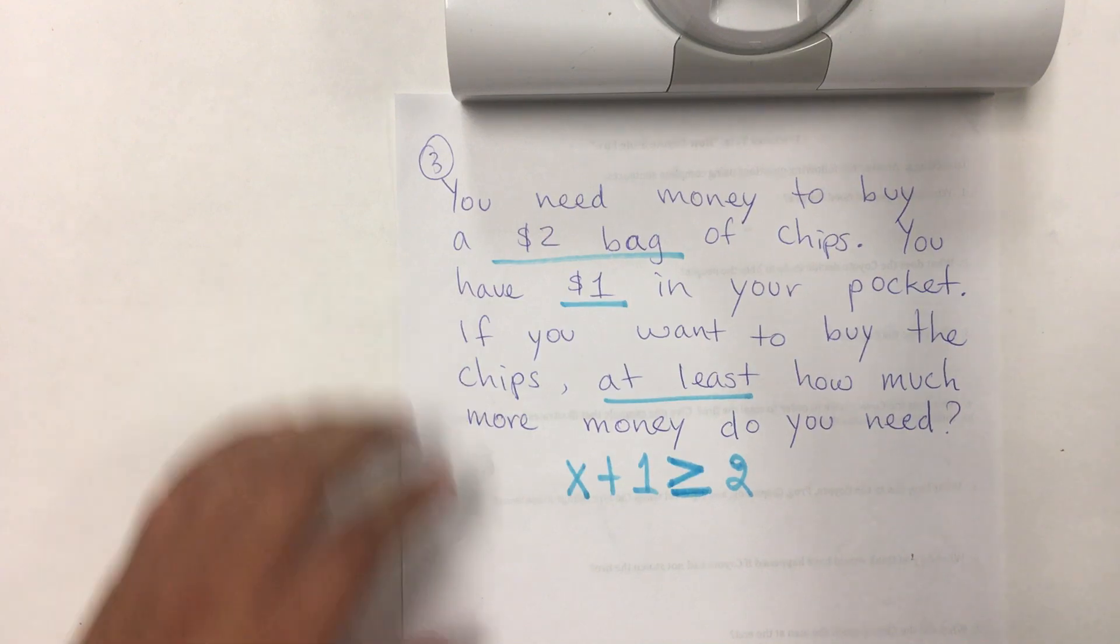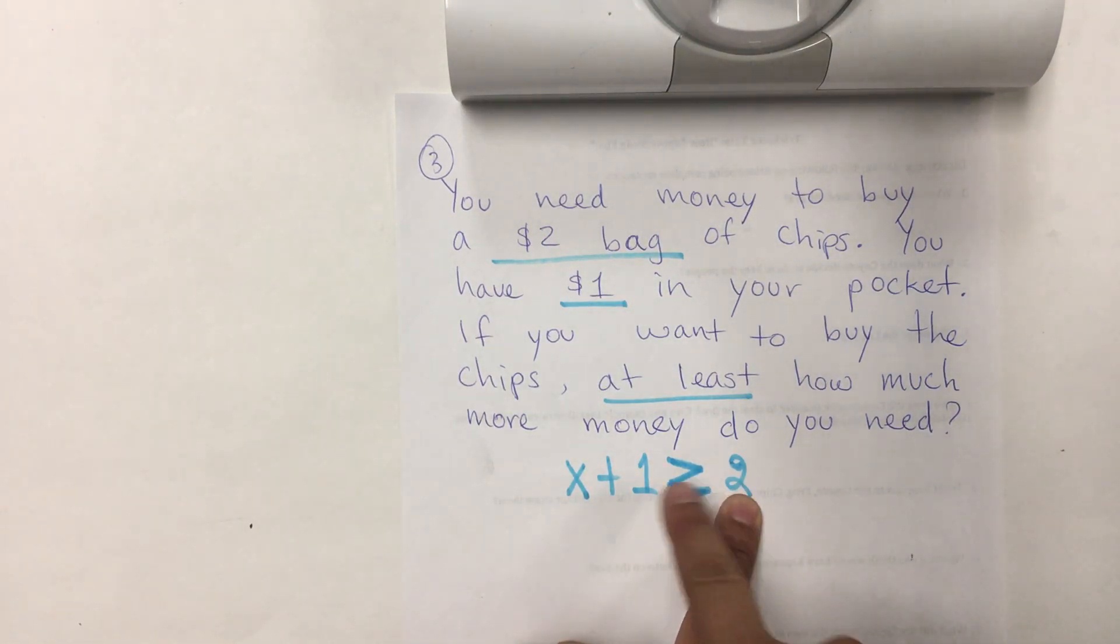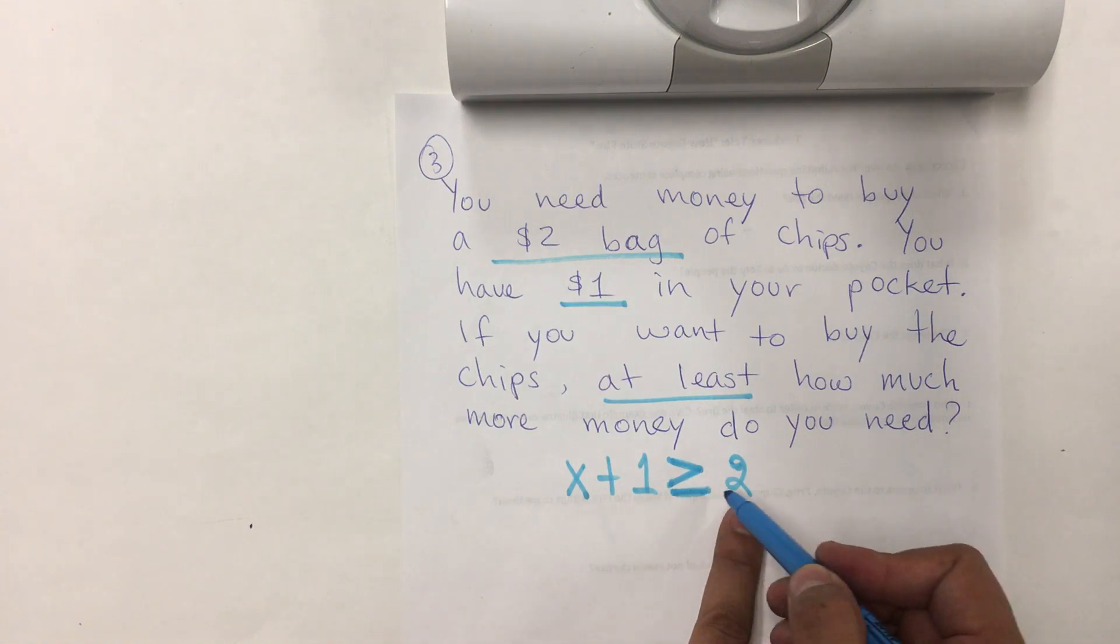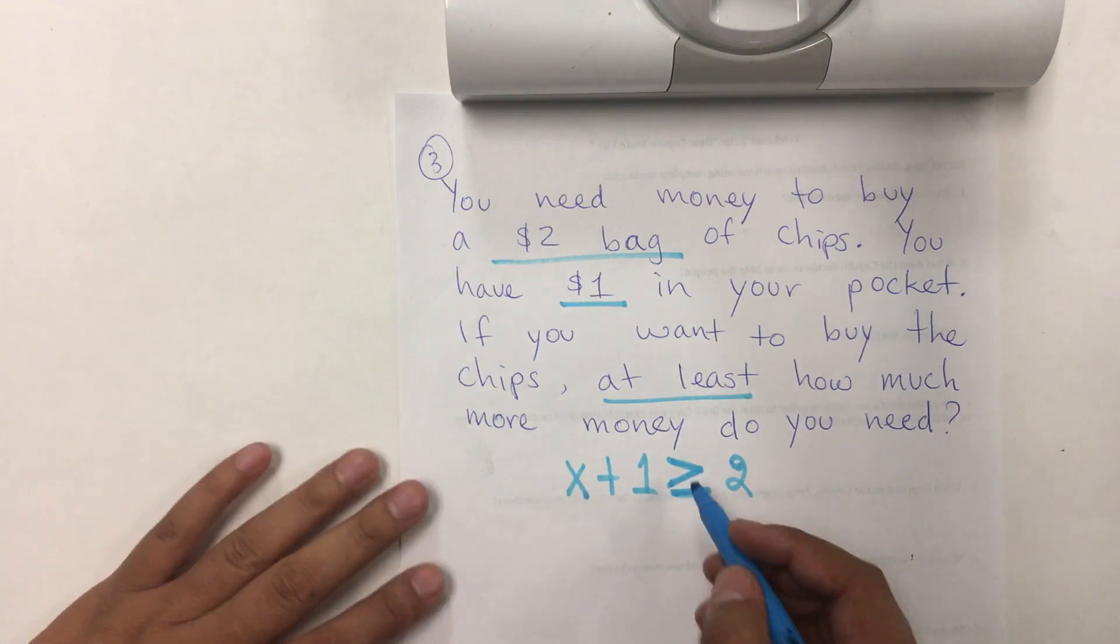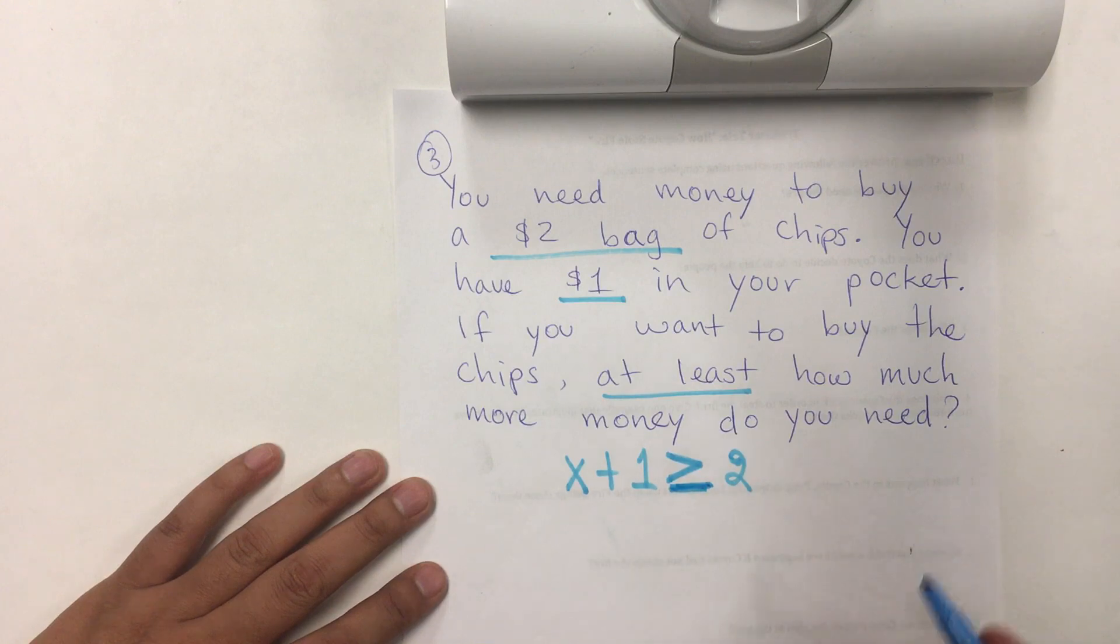Again, what you need to do is ask yourself, if I put the $2, my money together, does it need to be more or less than $2? It should be more. Otherwise, you're not going to be able to buy it. And some people say, I don't know when to put the equal sign. You can ask yourself, will it be enough if my money is equal to $2? And, yeah, it will be fine because as long as you have the $2, then you are going to be able to buy it. So, this can also be equal. That's when you put this symbol down here.